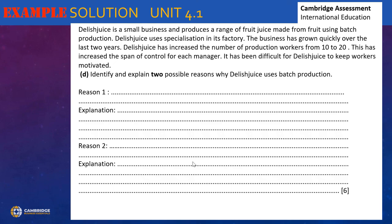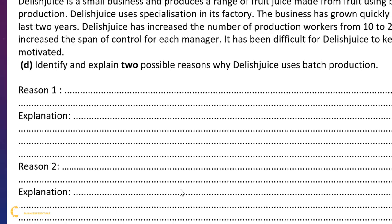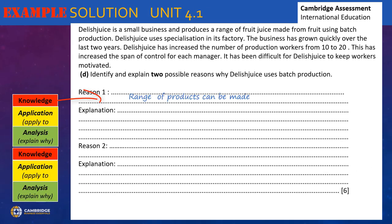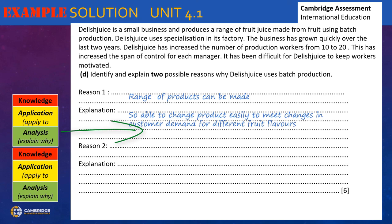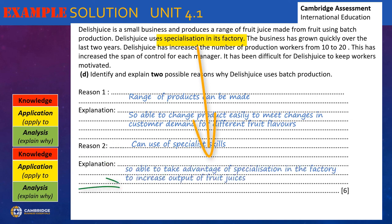Here we have an example on methods of production, a popular question in Paper 1. We are asked to focus on batch production at a juice company. We start with our first knowledge point: a range of products can be made. We include an explanation — able to change product easily to meet changes in customer demand — and apply it to the case study for the different food flavours. For the second point, we use another relevant knowledge point: can use specialist skills, with an explanation and relevant information from the case study. Remember to have two clear distinct points with different application points in each, and keep your answers short and to the point to stay within your six-minute time limit.